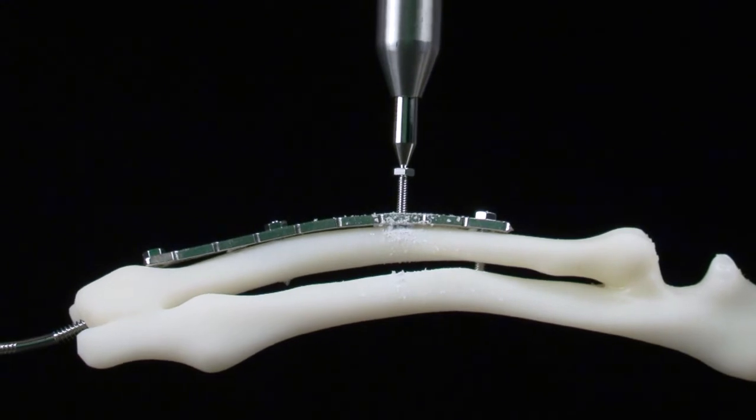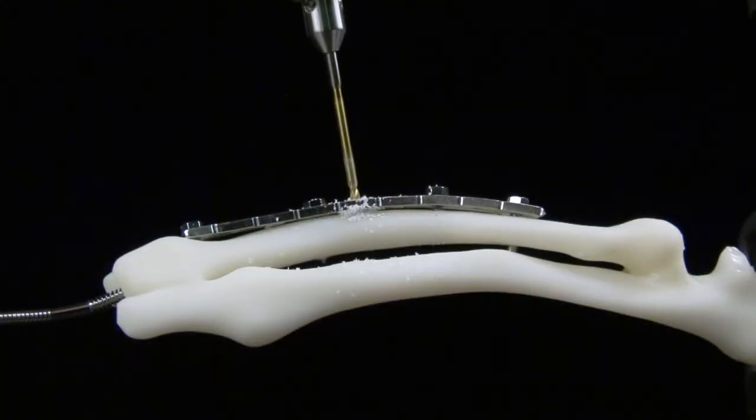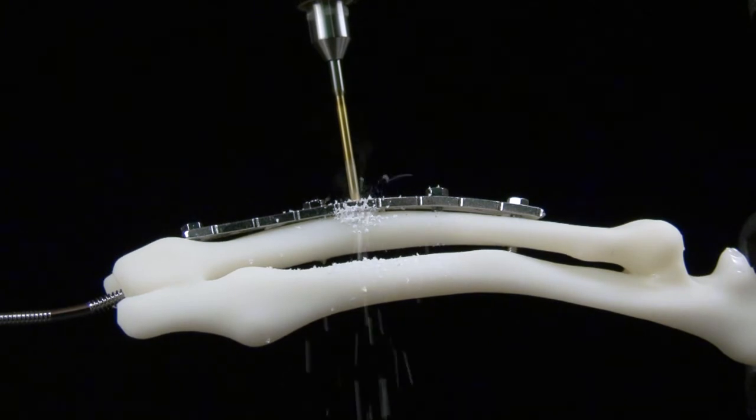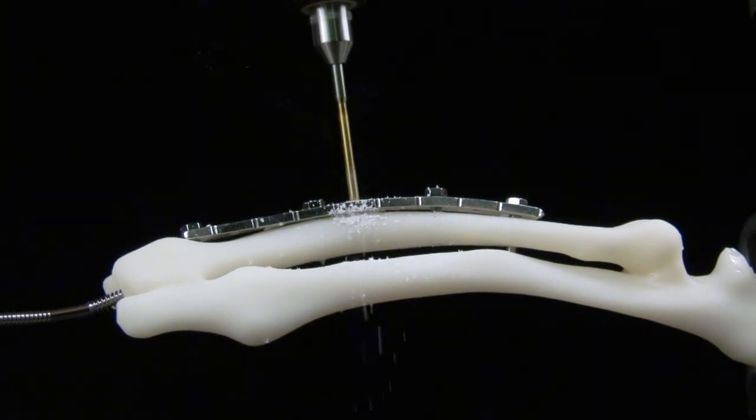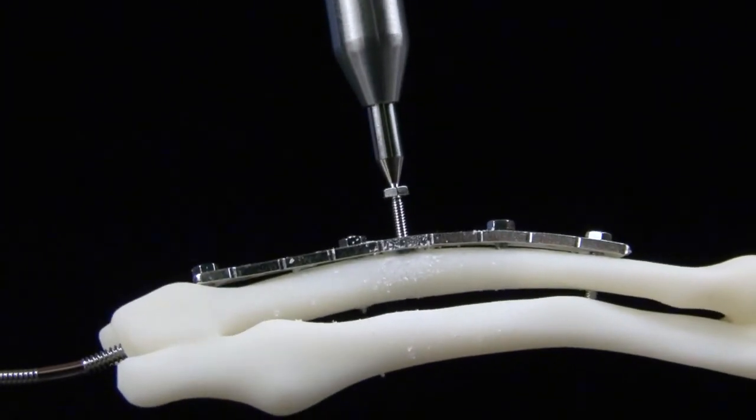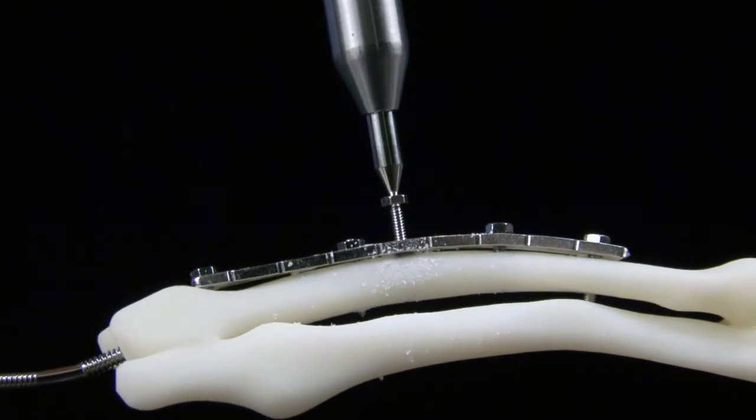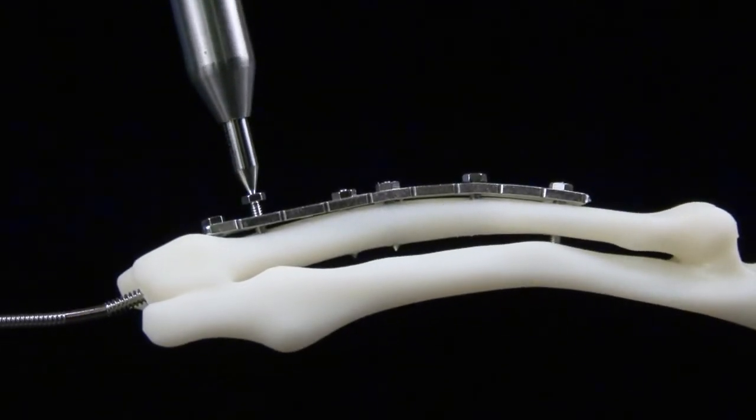After verifying proper fracture reduction and bone alignment, fill the remaining desired screw holes with screws using previously described techniques. The integrated screw shafts can now be safely removed immediately after inserting each screw.